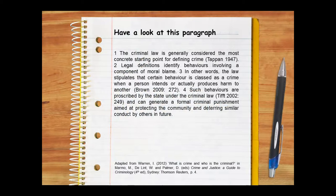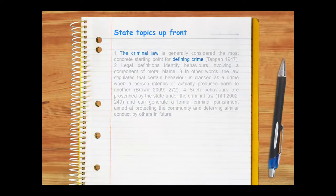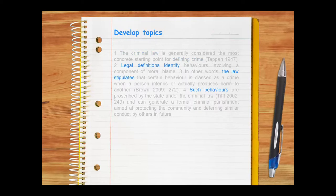Three things make it cohesive: paragraph structure, sentence structure, and sentence links. Let's take a look at each of these in turn. If we look at the paragraph structure, we can see that it begins by stating topics up front. It then develops these topics in the remainder of the paragraph.